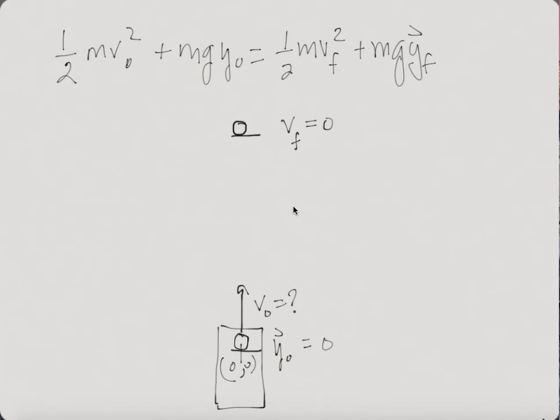And we can say our final height here, which is up here, it's going to be yf. And this vector that I just drew is delta y, which is yf minus y initial.